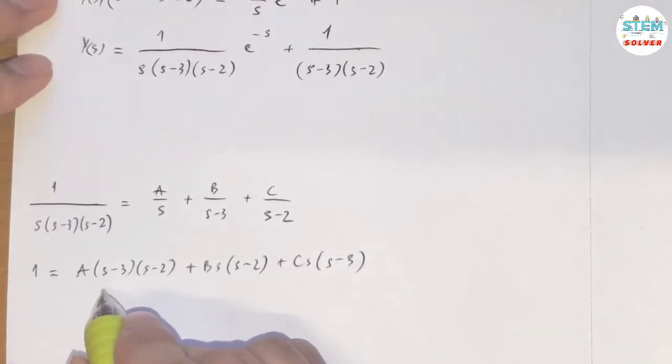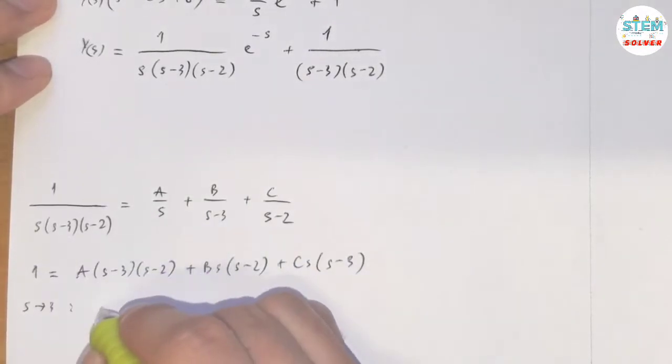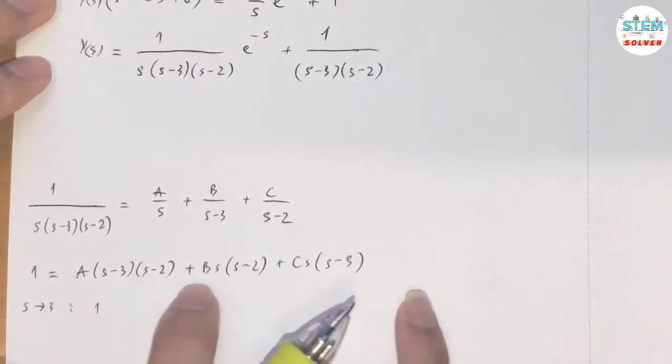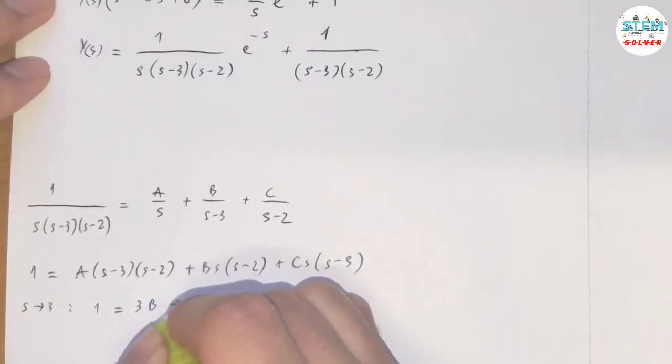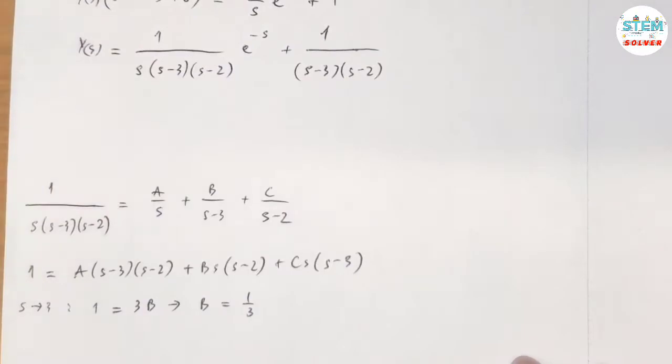So let me take the limit as s approaches 3. On the left side, I have 1. On the right side, s approaches 3, it eliminates this and this, so I have only this. So 3, 3 minus 2 is 1, 3c. So very quickly, I get the value of c, which is 1/3.